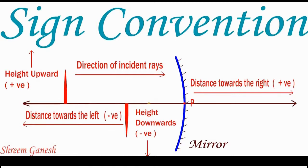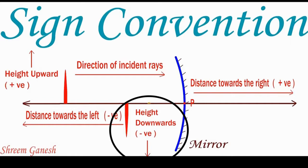Rule 3: Height of the object H0 and height of the image HI is taken as positive if measured upwards from the axis and negative if measured downwards.